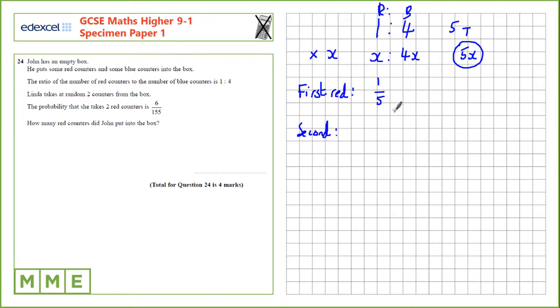The second red, where we've removed one counter already, one red counter already, so that's going to be the number of red counters, x, subtract 1, divided by the total number of counters, 5x, subtract the one red counter that was already taken.